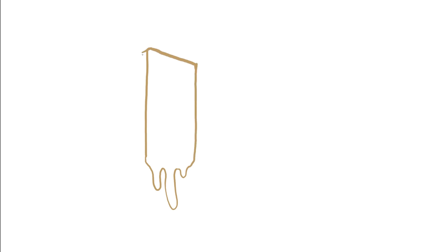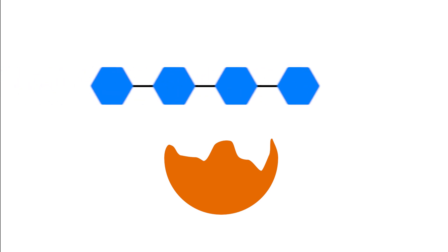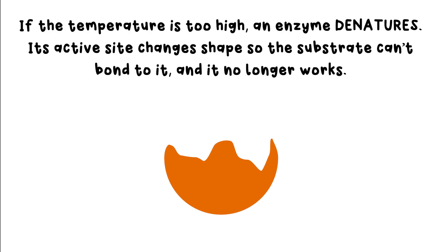If you put a lock in a furnace for a while, your key isn't going to fit it anymore, is it? That's because the lock has melted, it's changed shape. And that's also what happens with enzymes. The active site changes shape so the substrate no longer fits. That's why very hot temperatures are bad for us too. Our enzymes denature. It just means the active site changes shape, and that can be very bad news.